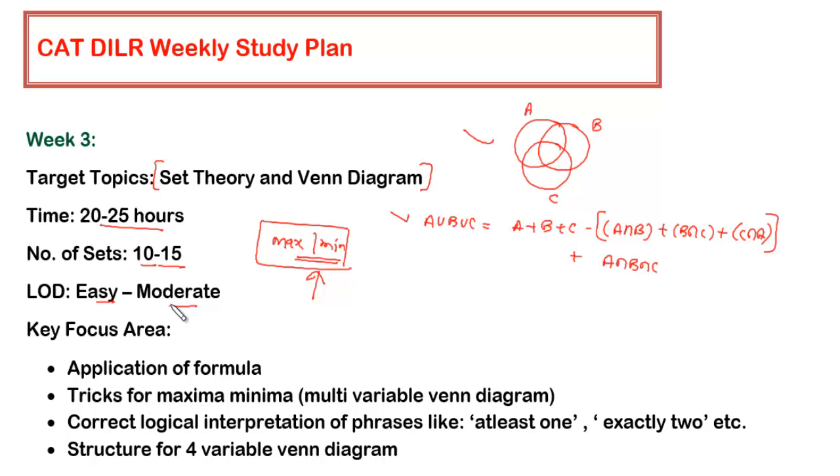The key focus here is very important. This topic has a mathematical formula, so you need to understand what is the formula and how to apply it in the given set. The questions for maxima minima can be applied for multiple variables - the trick is not limited to three variables. It can apply for four, five, or six variables, though in CAT usually questions have appeared for three to four variables only.